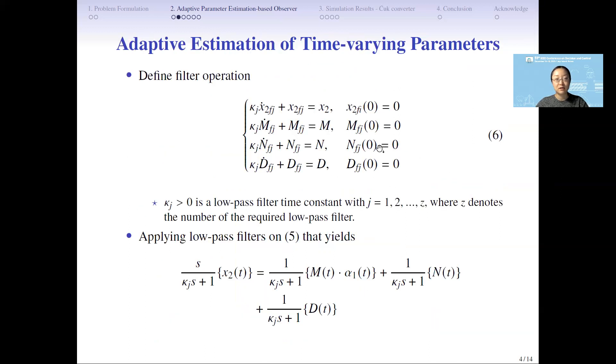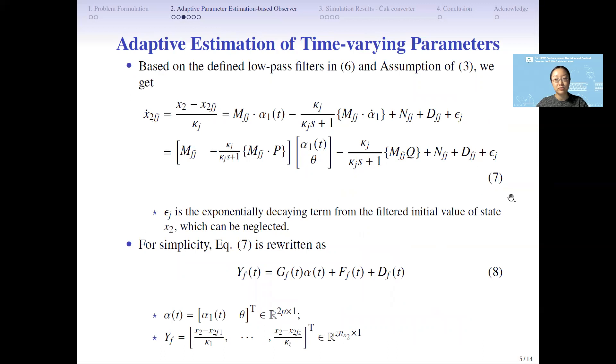By defining the filter operation and applying those low-pass filters into the equation, after some calculation we could directly get equation 7. You could see in equation 7, first, after the filter operation we don't need to require the information of the derivative x2. Also, by the Swapping lemma, the equation contains the derivative of alpha-1. Based on the assumption, we could add the theta in equation 7. After rewriting, we could get equation 8. You could see here in equation 8, many parameter estimation methods could apply to it.